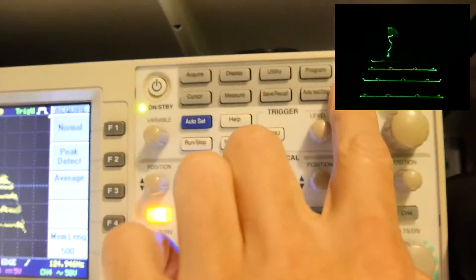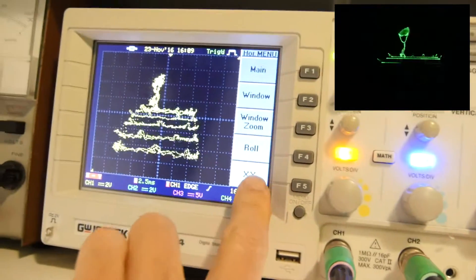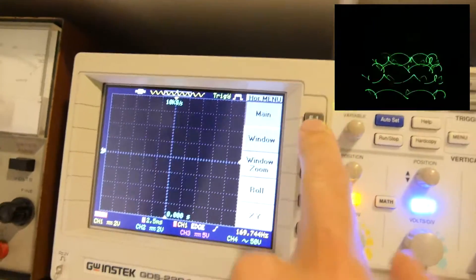What you've basically got to do is set your, if you've got one of these like this, push the horizontal button and you'll see a mode which is XY.